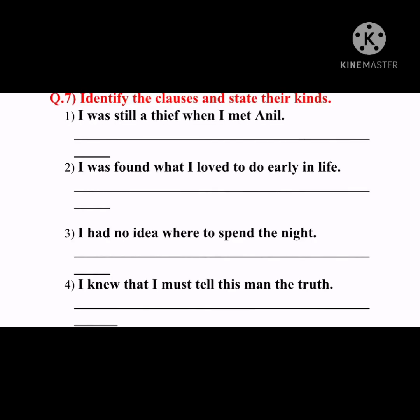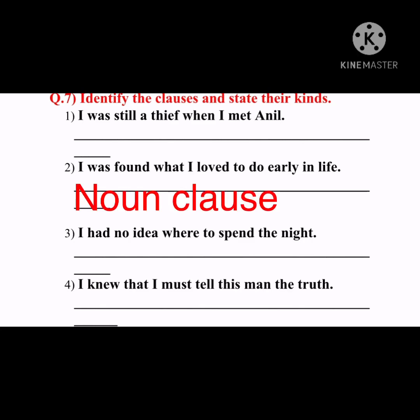Question number seven: identify the clauses and state their kinds. One: 'When I met Anil, I was still a thief.' 'I was still a thief' is the main clause; 'when I met Anil' is the subordinate clause. 'When' indicates adverb clause of time. Two: 'I was found what I love to do early in life.' 'I was found' is main clause; 'what I love to do early in life' is subordinate — noun clause. Three: 'I had no idea where to spend the night.' 'I had no idea' is main clause; 'where to spend the night' is subordinate — adverb clause of place.